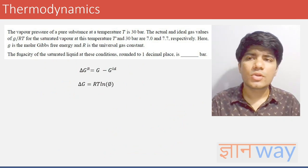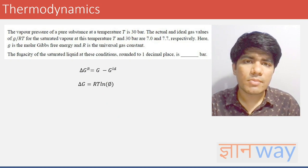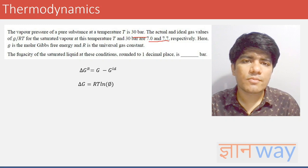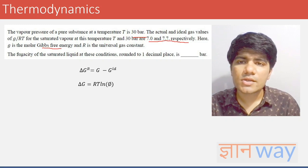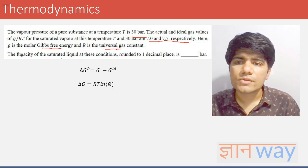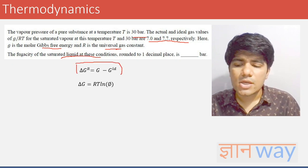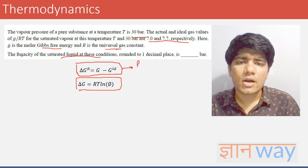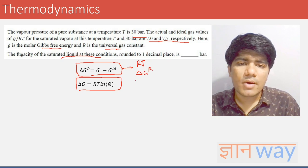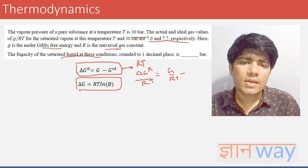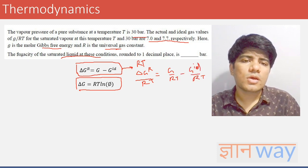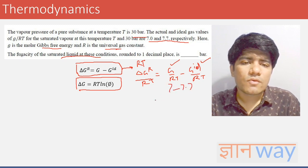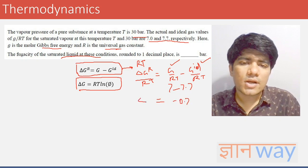The next question: the vapor pressure of a pure substance at temperature T is 30 bar. The actual and ideal values of G/RT for the saturated vapor at this temperature and 30 bar are 7 and 7.7 respectively, where G is molar Gibbs free energy and R is the universal gas constant. We have to find the fugacity of the saturated liquid. Using ΔGr = G − G_ideal and ΔG = RT ln φ, dividing by RT gives ΔGr/RT = G/RT − G_ideal/RT = 7 − 7.7 = −0.7.